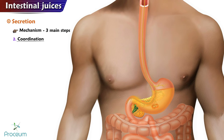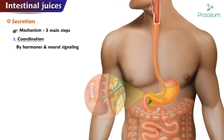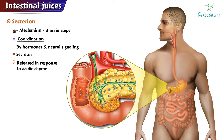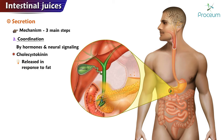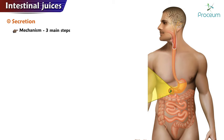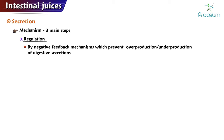Coordination: the secretion of various components of intestinal juice is coordinated by hormones and neural signaling. For example, the hormone secretin is released in response to the presence of acidic chyme in the small intestine and stimulates the pancreas to secrete pancreatic juice containing digestive enzymes. The hormone cholecystokinin, released in response to the presence of fat in the small intestine, stimulates the release of bile from the gallbladder.